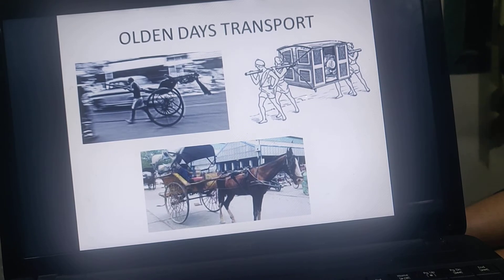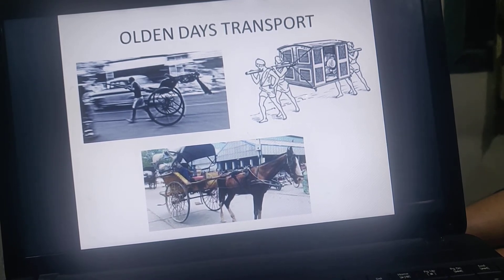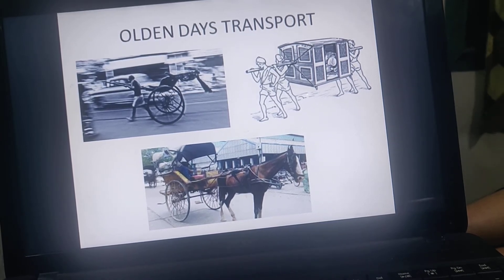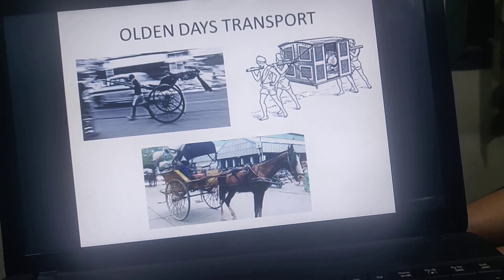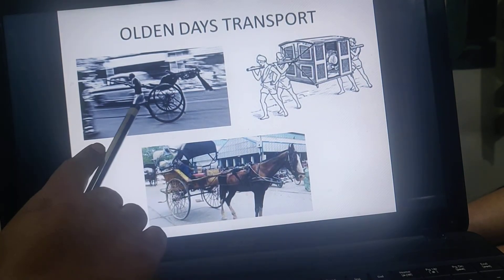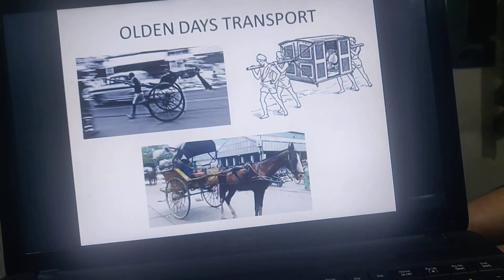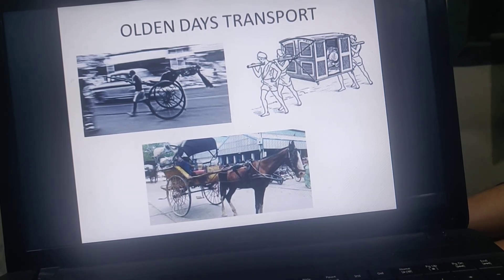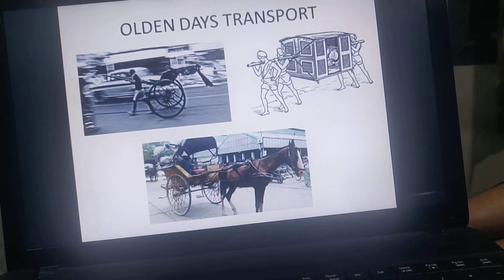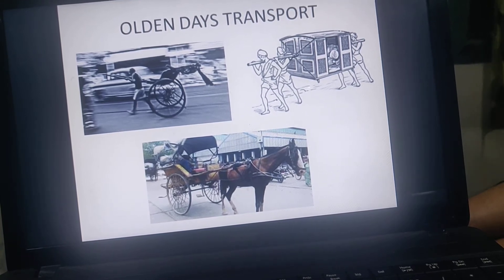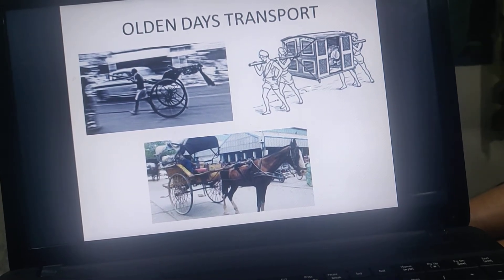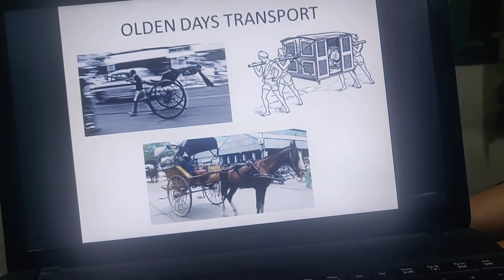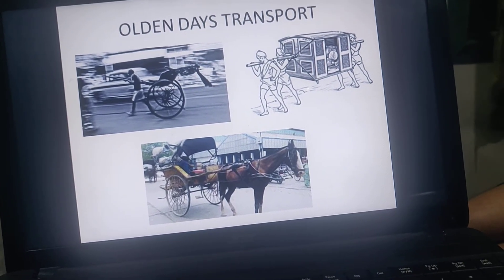Now we have the olden days transport. Today we have many cars, bikes, and buses, but a very long time ago there were no such vehicles. People used horse carts and camel carts. Kings and queens used to travel in a buggy-type vehicle called a chariot — a rath. Some people, like ladies, used to sit inside a cart carried by human beings. These were the olden days transport.